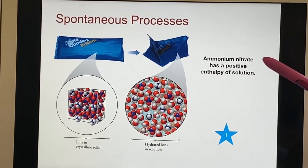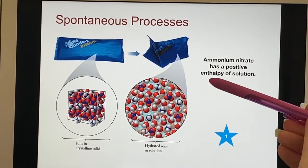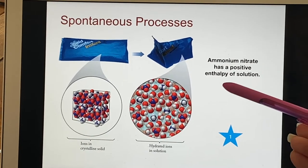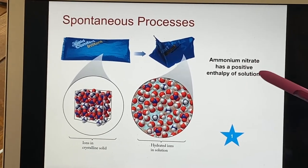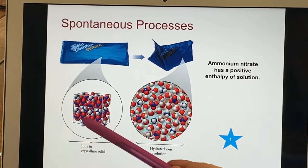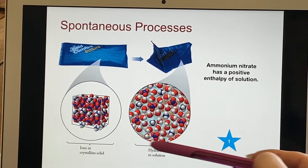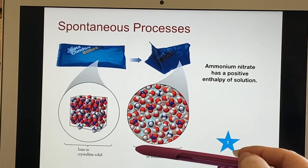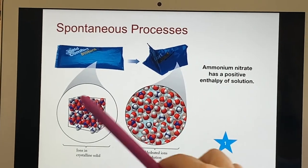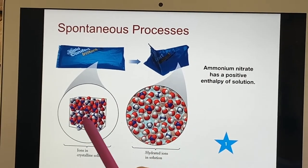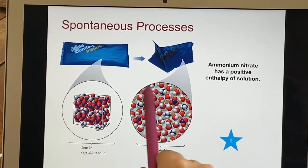Here's ammonium nitrate. It has a positive enthalpy of solution. Now there's a different enthalpy, enthalpy of solution. When it goes from being a crystal to being distributed in a solution. It's got a positive enthalpy. You have to put energy in to make this occur.